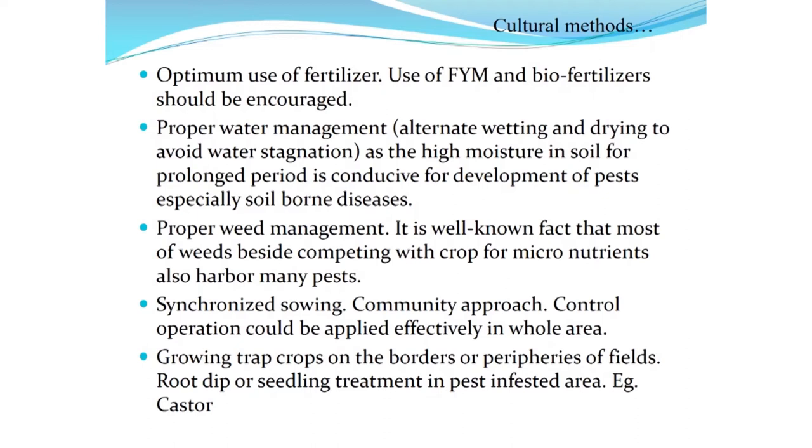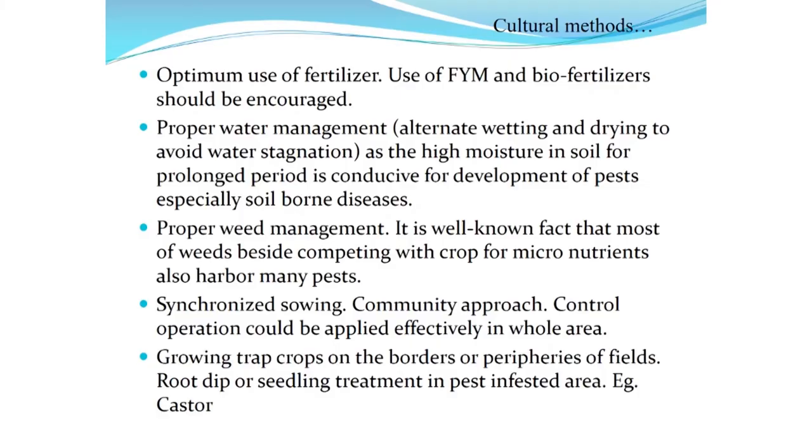Synchronized sowing on a community approach — where the entire area is sown with a particular crop at the same time — means the crop is at the same age and all farmers carry out management practices together, suppressing insect pests from that area. Growing trap crops on the borders and peripheries of fields attracts insects which can then be destroyed, saving the main crop. For example, castor attracts Spodoptera litura and can be sown on borders of different crops to easily control the tobacco caterpillar. Seedling treatment in pest-infested areas is also a common cultural practice.